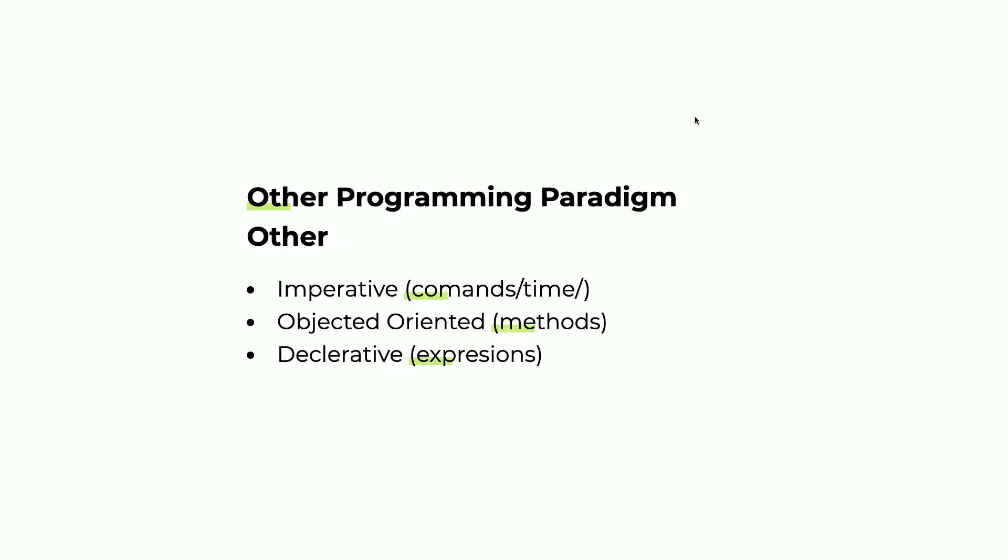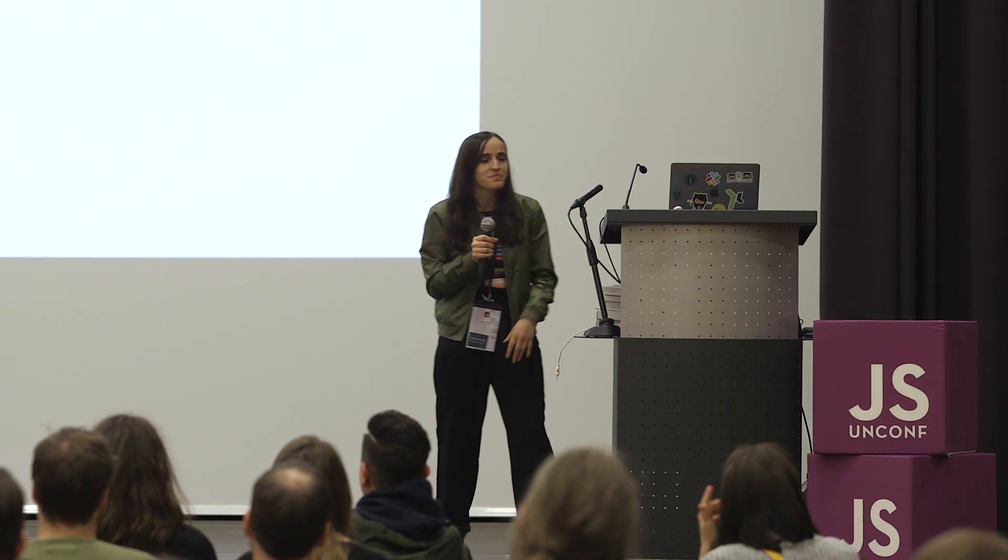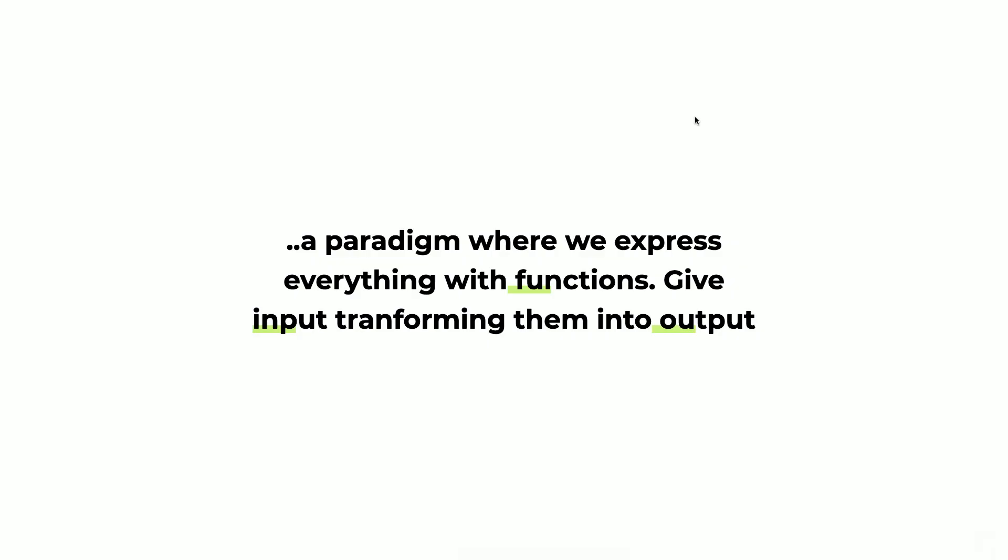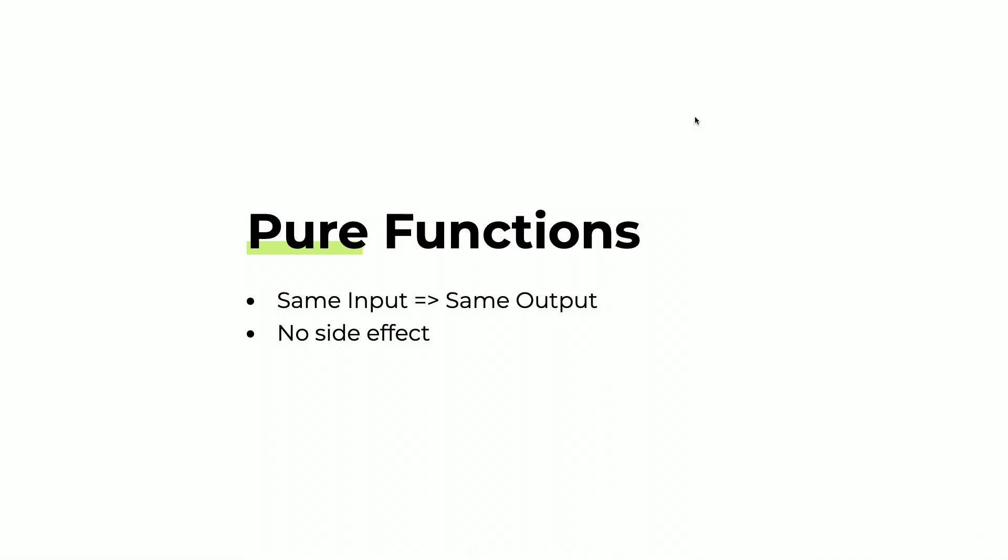The opposite of imperative programming is declarative programming. If imperative programming is built out of commands, declarative programming is built out of expressions — it's like saying 'that's what I want, I don't care how you deliver it to me.' So what is functional programming then? Functional programming is a paradigm where we express everything with functions, and the way elements interact is by giving input and transforming it into an output — using pure functions. A pure function is a function that, for the same input, always gets the same output without side effects. Functional programming is kind of a sub-paradigm of declarative programming.